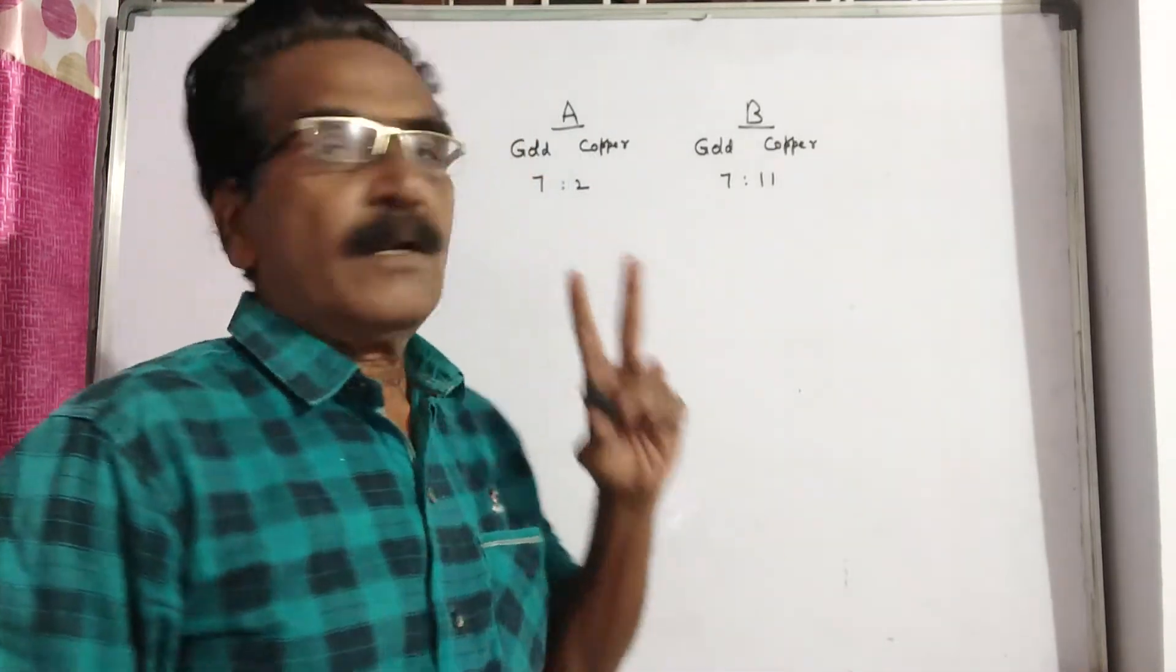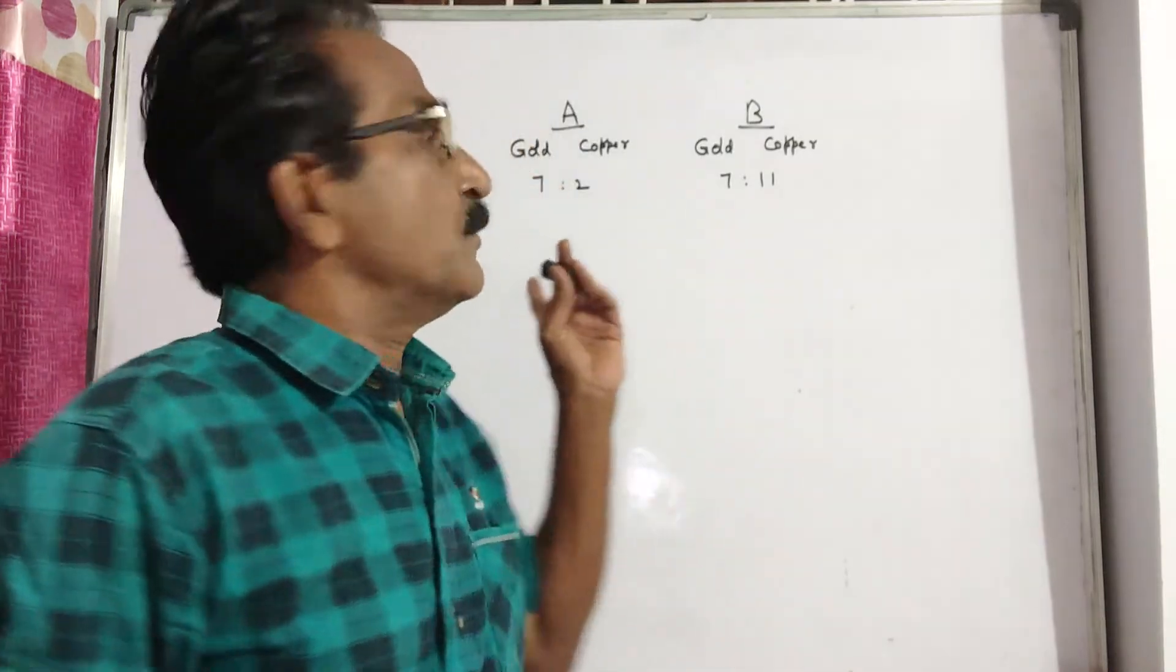See friends, two alloys A and B contain gold and copper in the ratio 7 is to 2 and 7 is to 11.